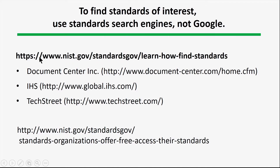I want to emphasize that when you're looking for standards materials, you will not find them on Google very well, because the materials often aren't publicly available. You might look at the Standards.gov NIST website to look for information. Here are a few other websites that might be useful: the Documentation Center, IHS, and a number of commercial efforts to provide standards. Realize that you're going to have to pay for the documents — that's the way they make their money. You can also get some things from NIST; you can get some of these standards for free if you know who to talk to at NIST, and I provide a link to that.